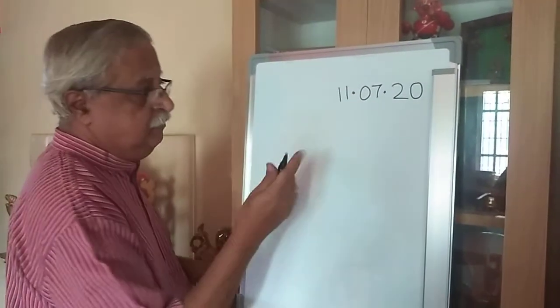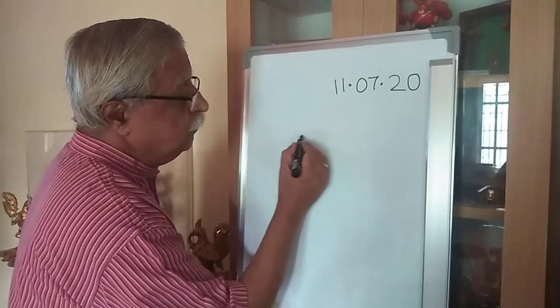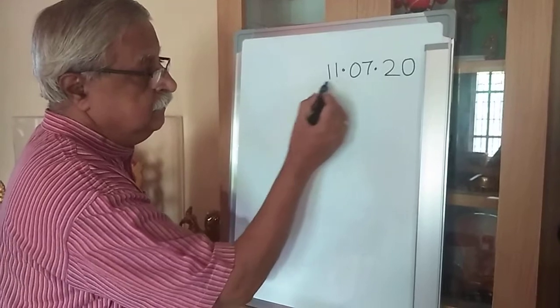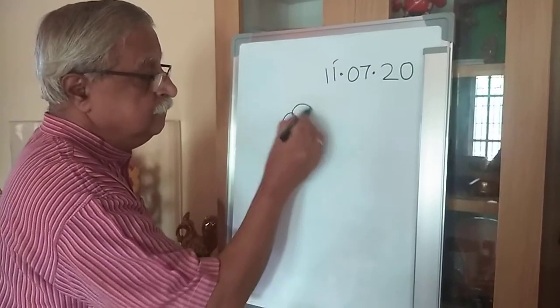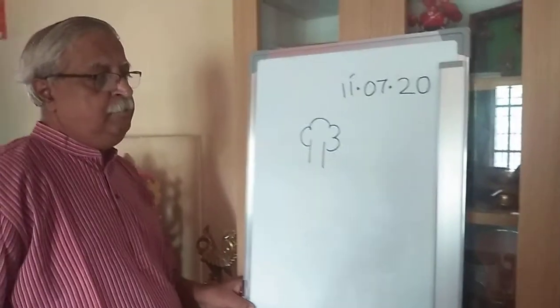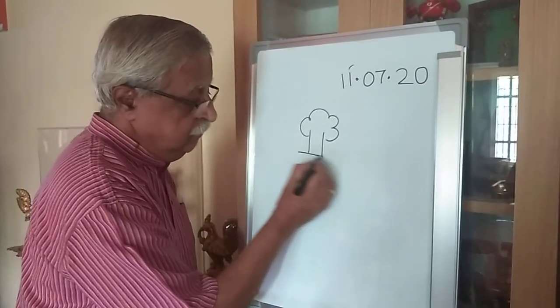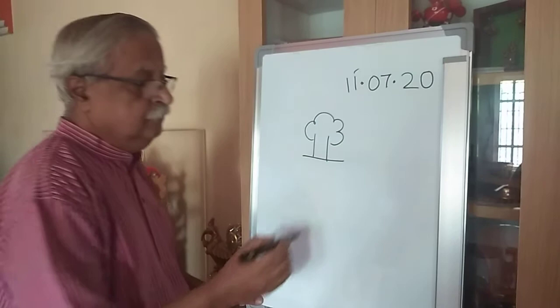So today is 11, 7, 20. Now, just see what you can do with the numbers. So simple, just put one 3, one more 3.